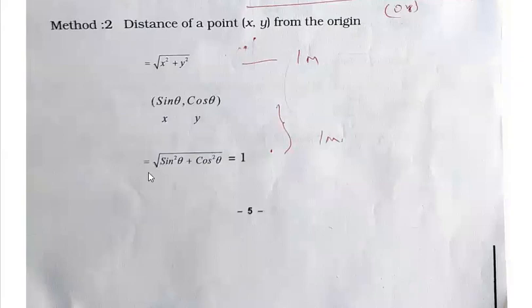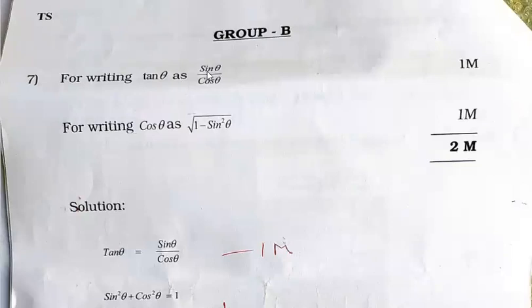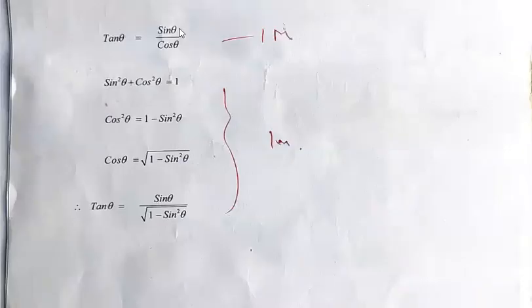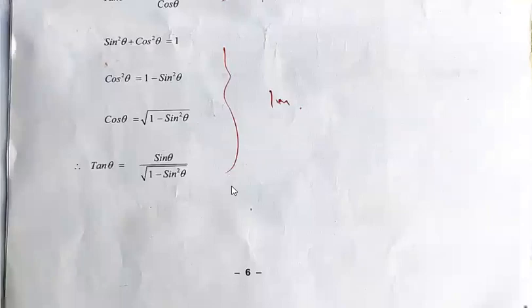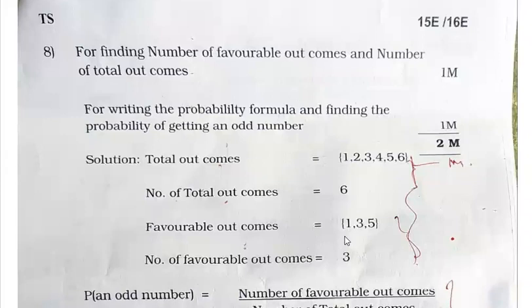This is another method — even if they wrote the formula for this one they will get one mark. For writing tan θ = sin θ / cos θ they get one mark; for writing cos θ = 1 / √(1 − sin²θ) that is one mark. Simply writing tan θ in terms of sin θ by substituting gets one mark, and the whole simplification step gets one mark. For finding the number of favorable outcomes and total outcomes you get one mark for each step.